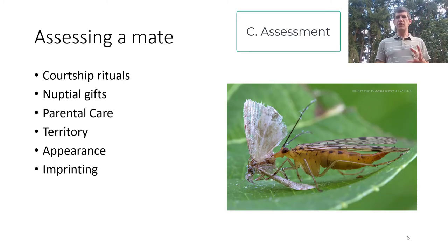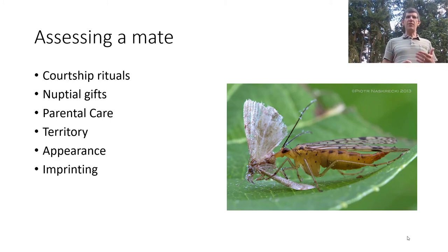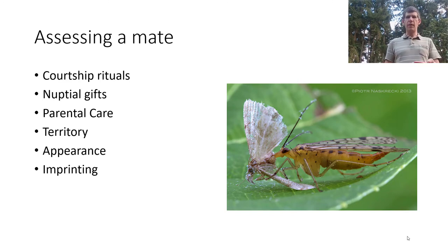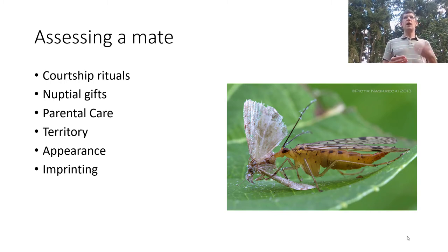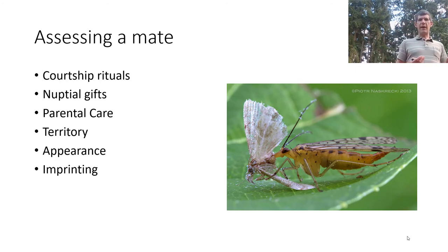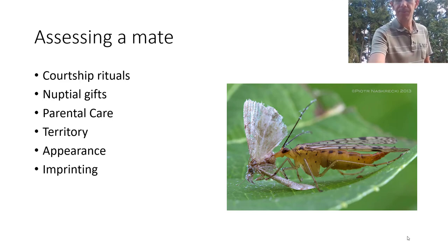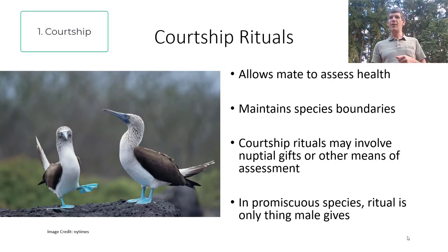Beyond spots, females assess mates through six different forms: courtship rituals, nuptial gifts, parental care, territory, appearance, and imprinting. Here is a scorpion fly carrying a dead moth — we'll return to why shortly. First, courtship rituals: the male blue-footed booby shows his blue feet to the female, allowing her to assess his health. Torn, parasite-ridden feet indicate poor health, meaning poor genes. This also maintains species boundaries — a red-footed booby displaying red feet would not attract a blue-footed booby female.